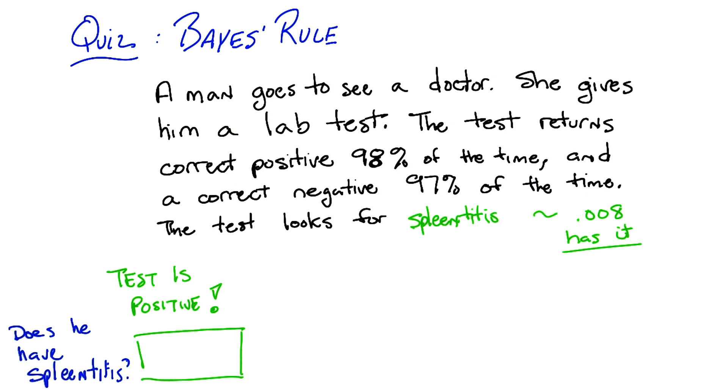All right, before I try to answer that, can I get a clarification? Please. So the 98 is a percentage and 97 is a percentage. Is .008 also a percentage? No, it's not. So if I wanted to convert it to a percentage, it would be .8%. Got it. All right. Now I think I have what I need. Okay. All right. So, you think about it. Go.